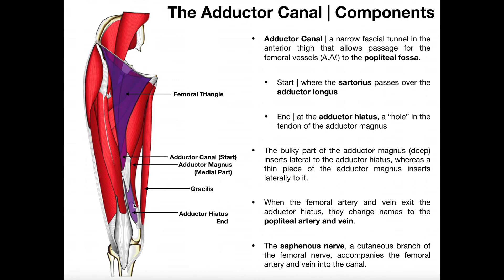They move down the canal, go through the adductor hiatus, and when the femoral artery and vein exit the adductor hiatus, they change names. So now they are the popliteal artery and popliteal vein. There are also some nerves that run through the adductor canal as well — the saphenous nerve. Make sure you understand that this is not the saphenous vein or great saphenous vein. This is the saphenous nerve, and it's a cutaneous branch of the femoral nerve, and it accompanies the femoral artery and vein through this canal.